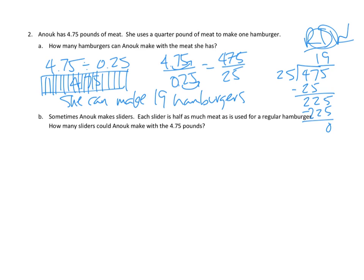If sliders use half as much meat, then we could make twice as many sliders. Basically, we're saying whatever amount we needed for each one of the hamburgers, that would make one hamburger, or it would make two sliders. So why don't we just say it's 19 times 2, which is 38. Half as much meat makes twice as many burgers. So I think I'm just going to go ahead and write it. She can make 38 sliders.